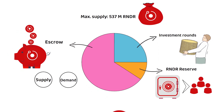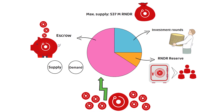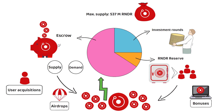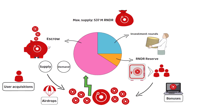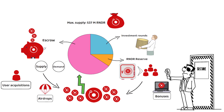To explain: as the network scales, more Render tokens will need to be released into the ecosystem to keep it operational. These tokens will come through either the Render reserve or the 65% held in escrow, and will enter the ecosystem as user acquisitions, bonuses for node operators, or airdrops. Until these funds have been allocated, they sit in a secure third-party account where no one can misappropriate them in the meantime.